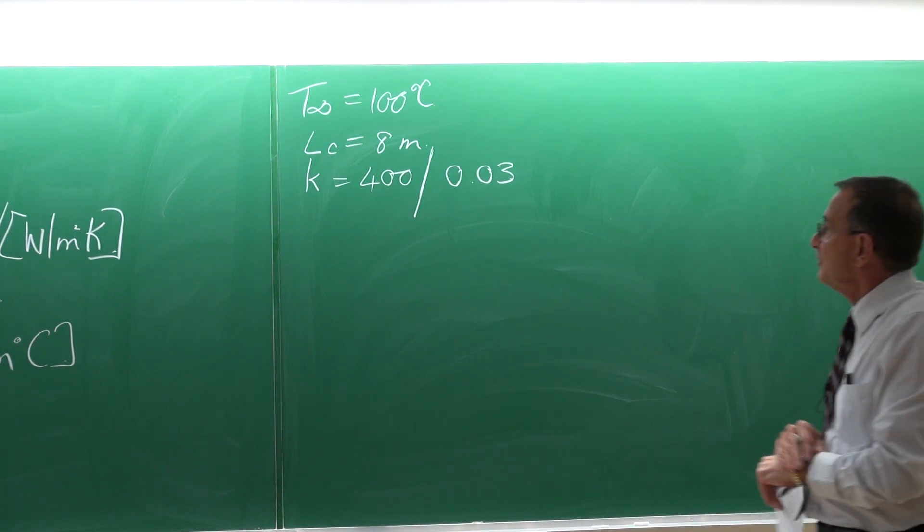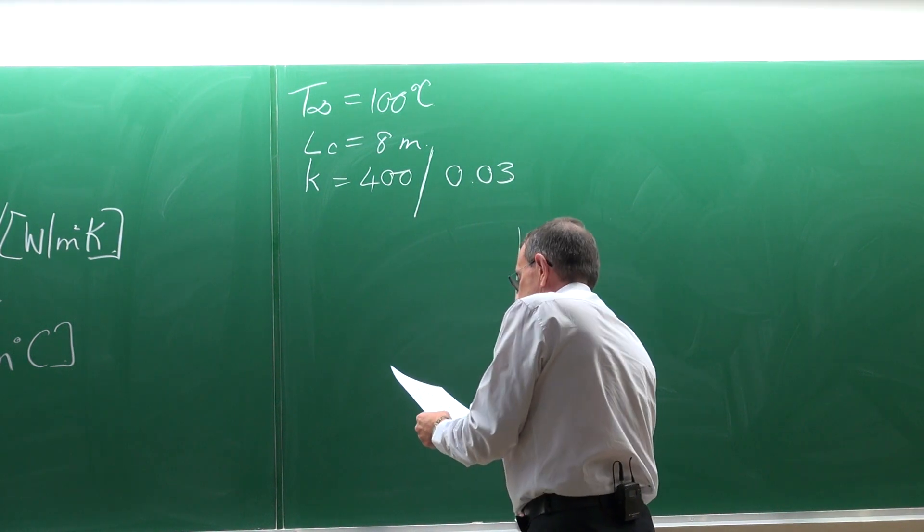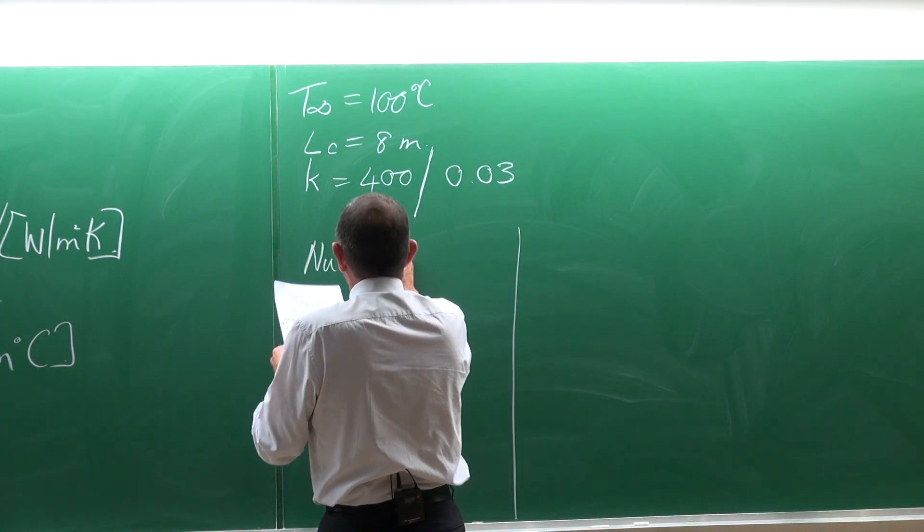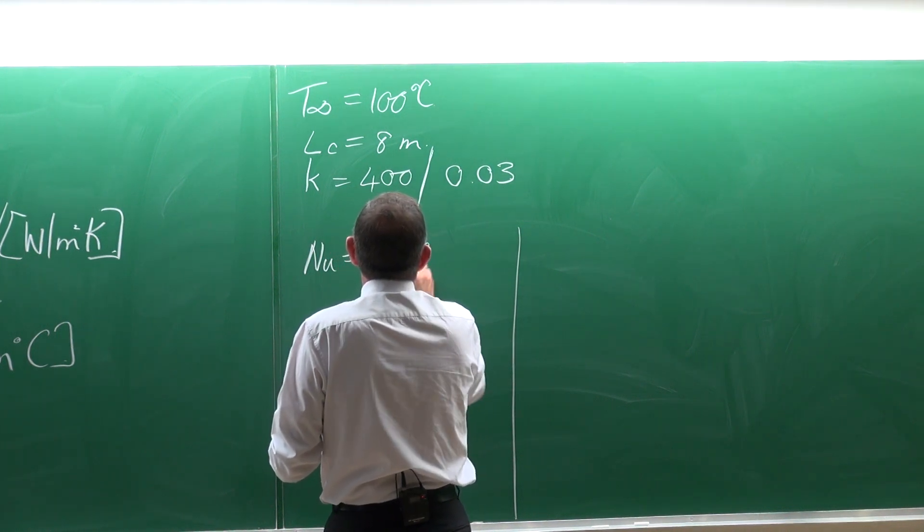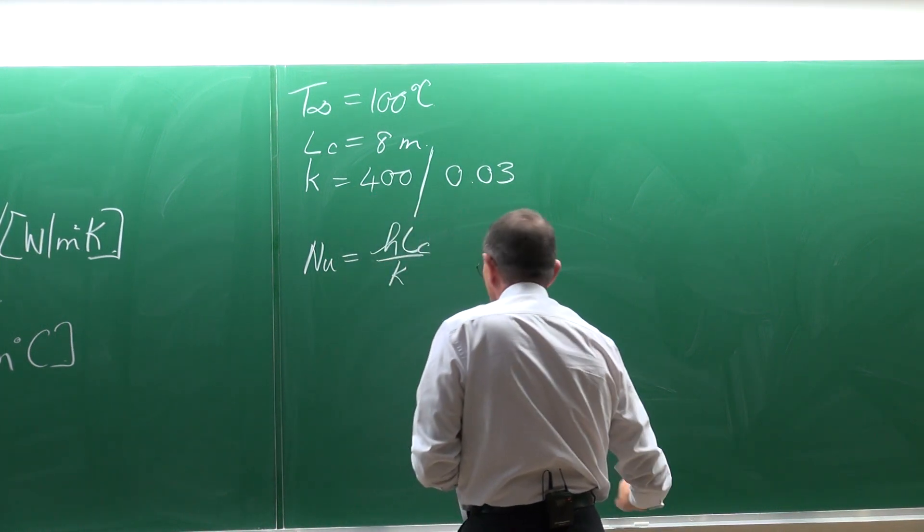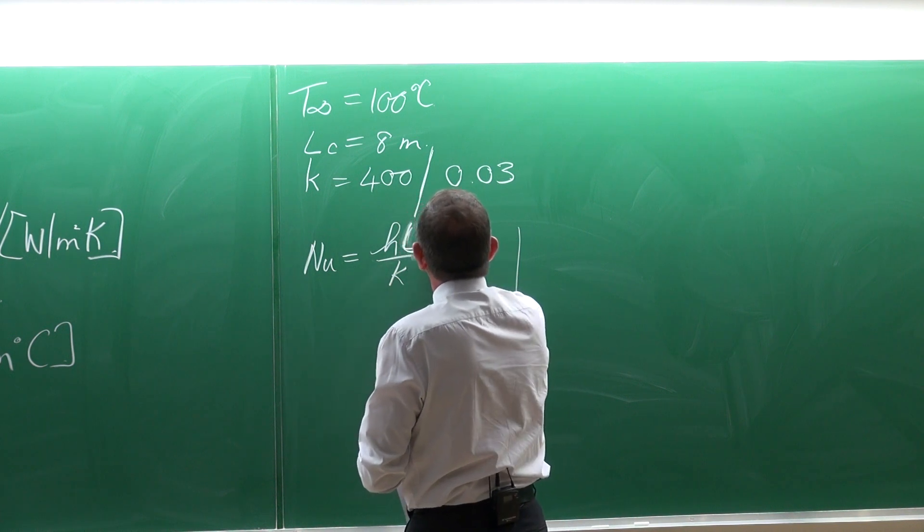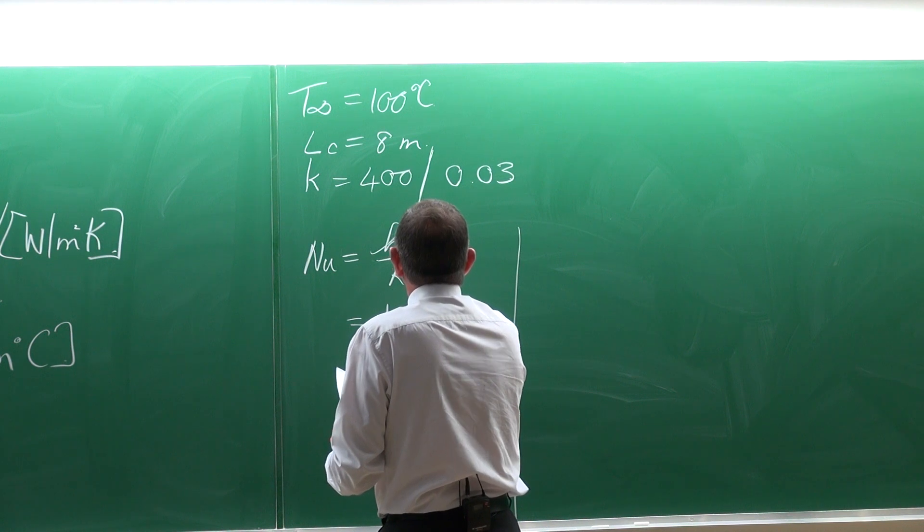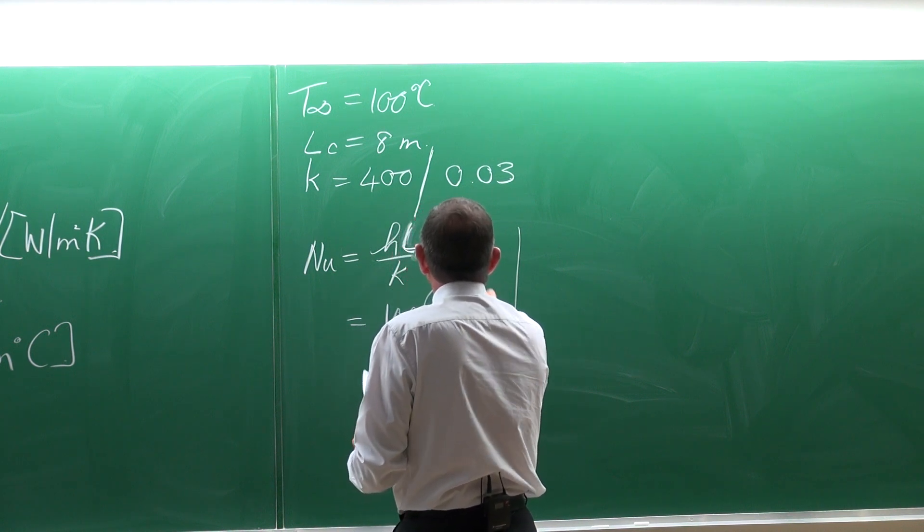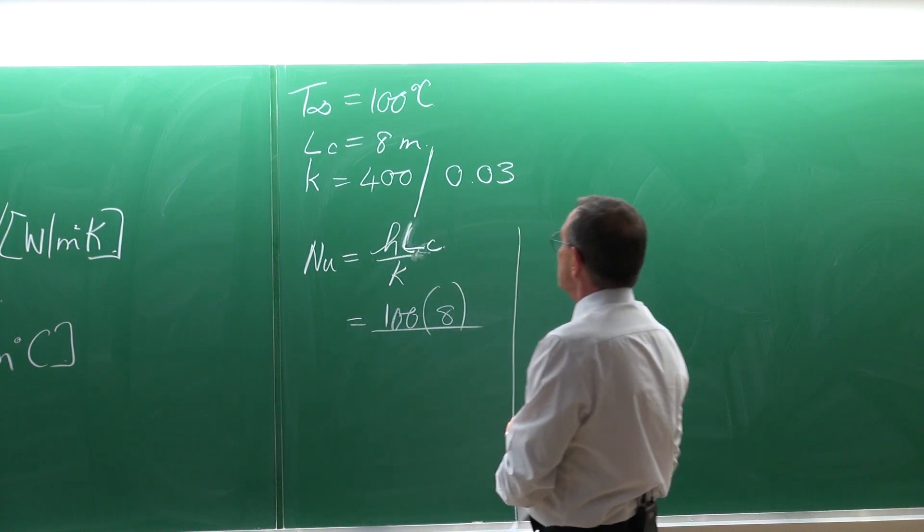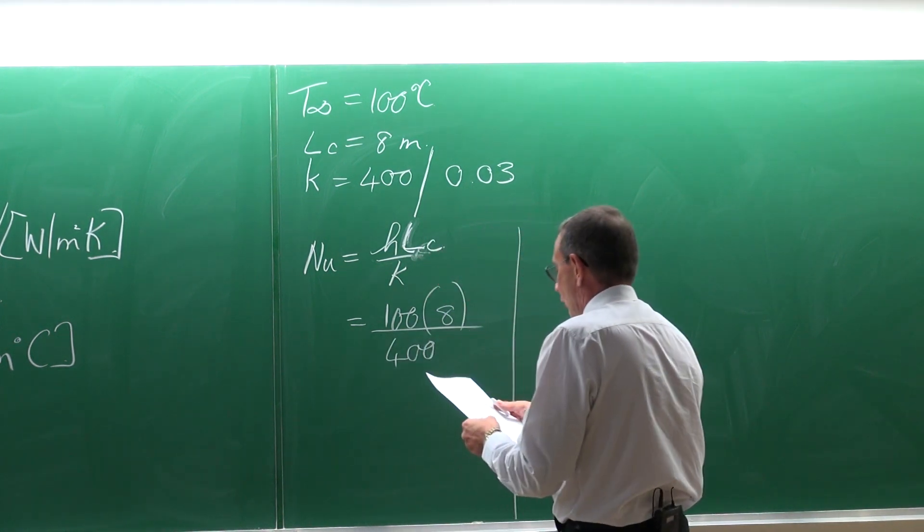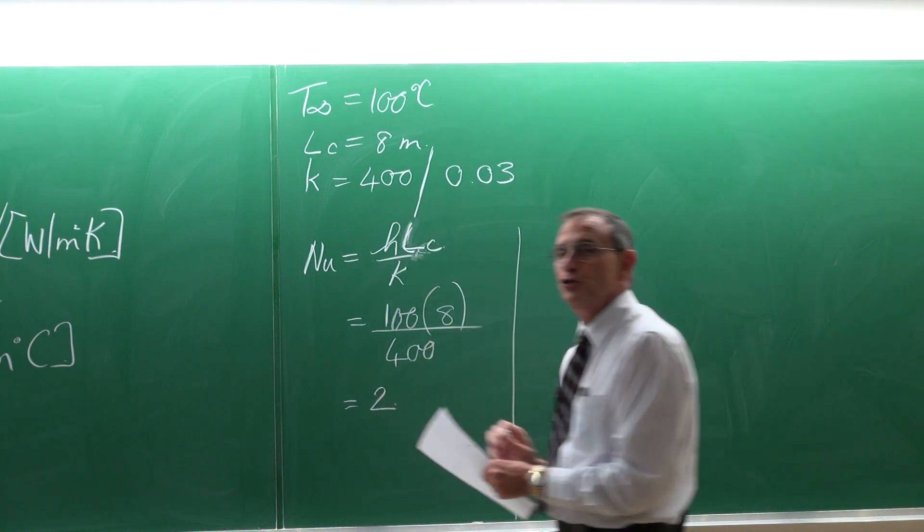So the same heat transfer coefficient for both problems. Let's just look at the Nusselt numbers. The Nusselt numbers would be H multiplied by the characteristic length divided by K. Heat transfer coefficient is 100, the characteristic length is 8, and the thermal conductivity is 400, so the Nusselt number is equal to 2.